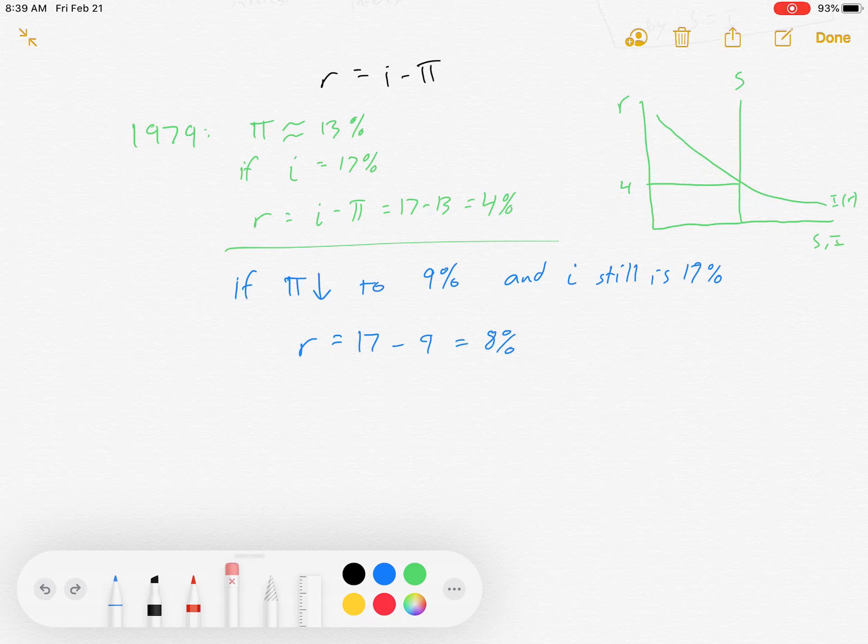Well, the real interest rate would change. It would be 17 minus 9, which is 8%, which on our market up here looks like that.